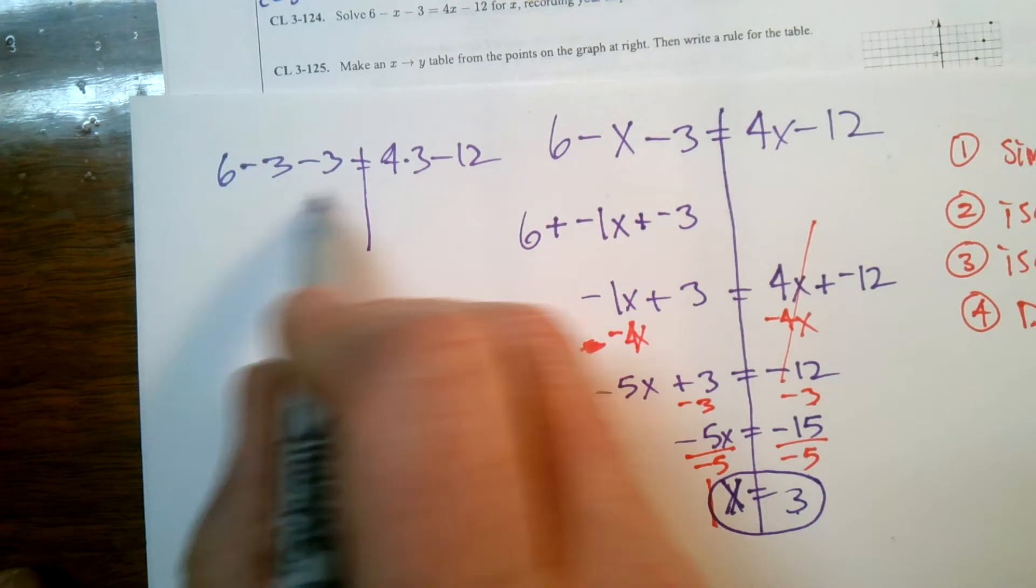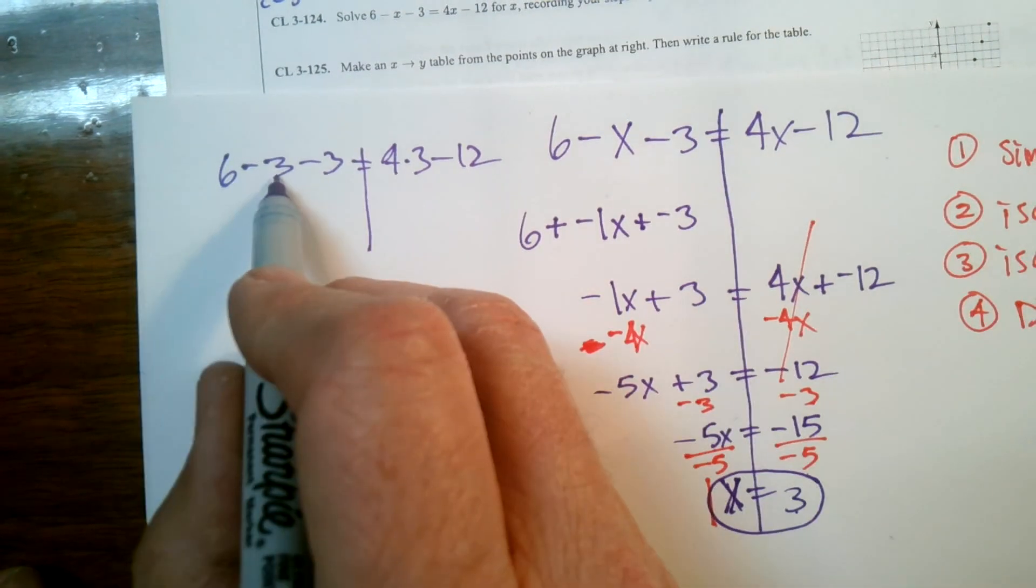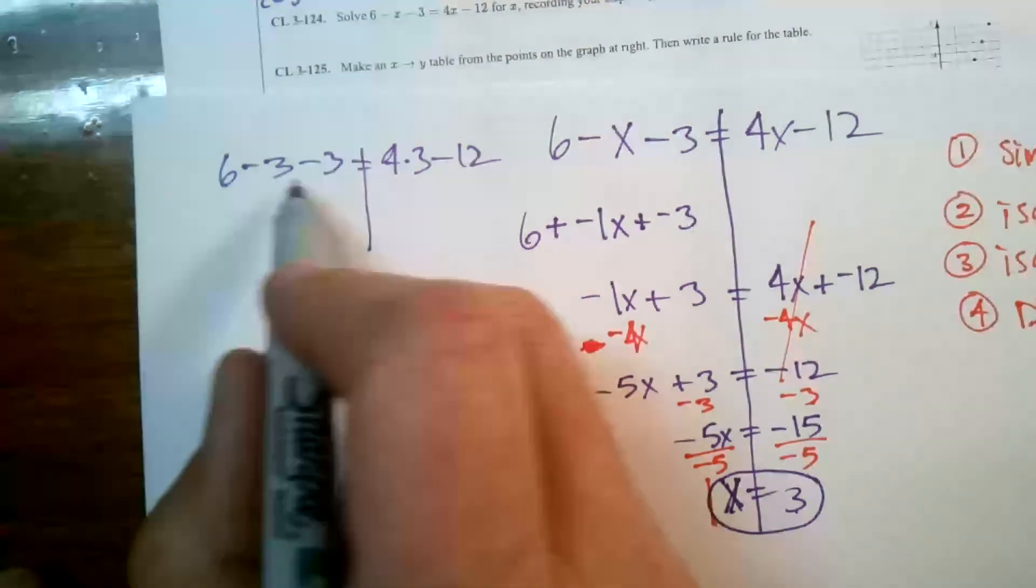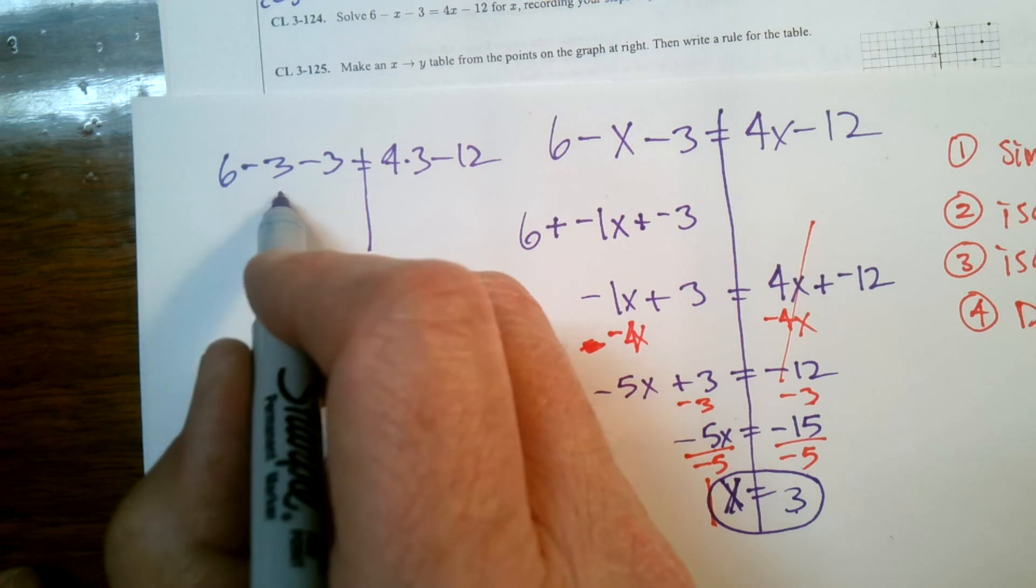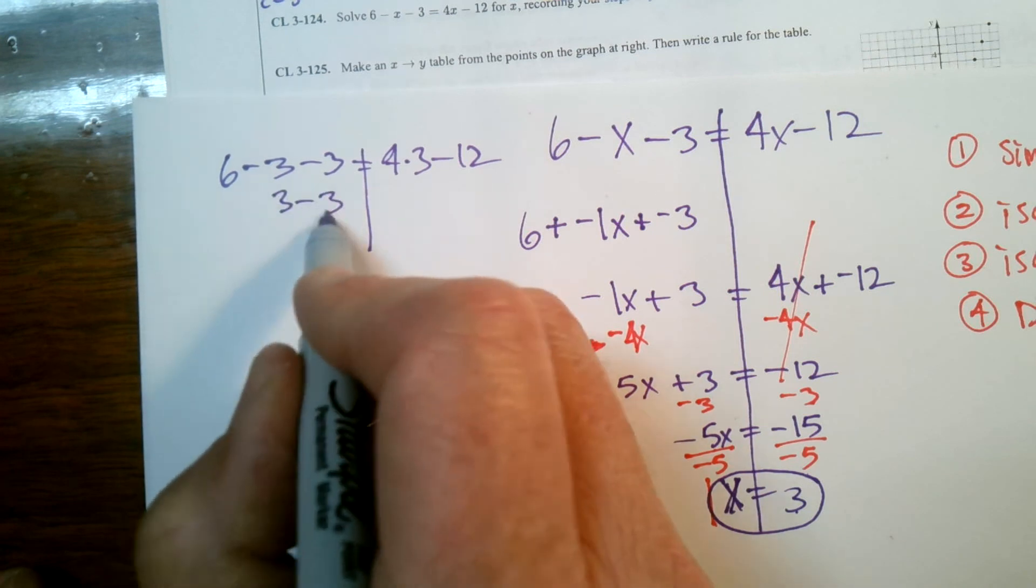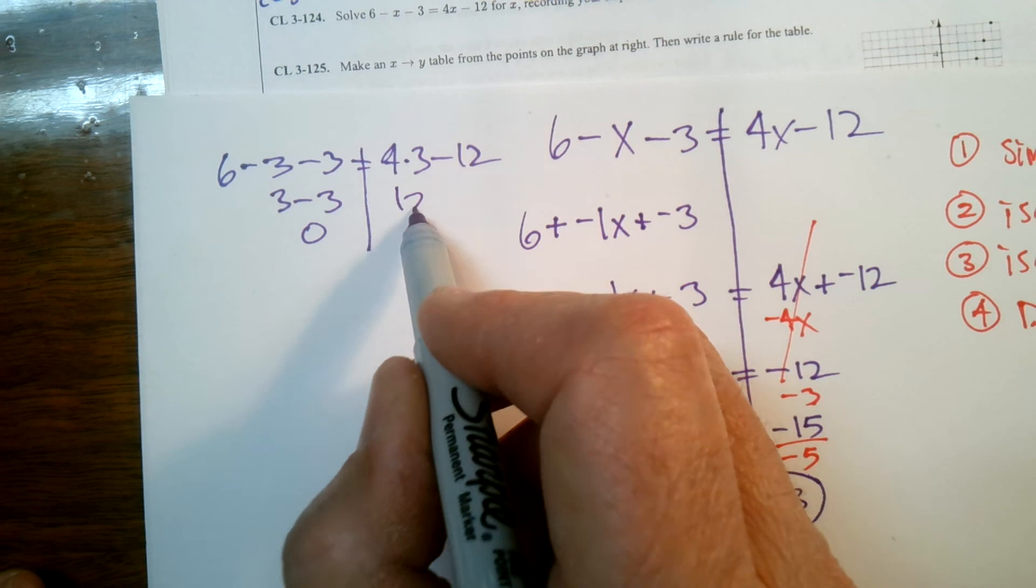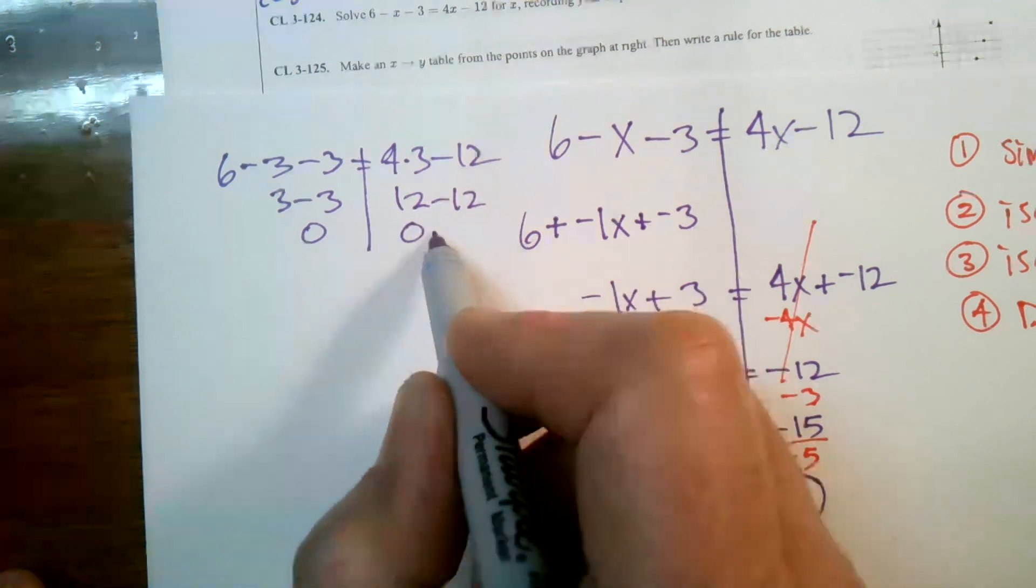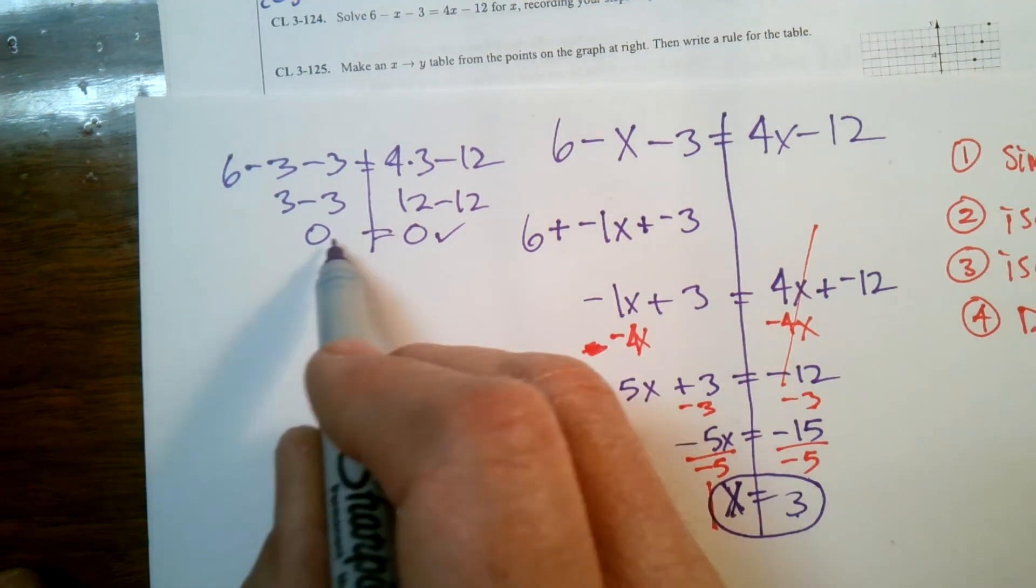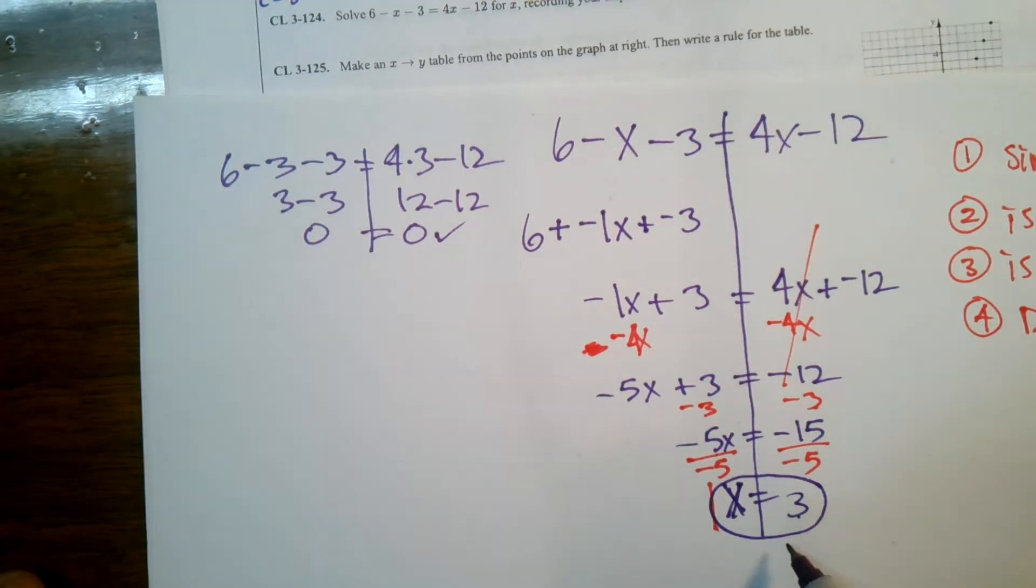6 minus 3 minus 3: 6 minus 3 is 3, 3 minus 3 is 0. 4 times 3 is 12, 12 minus 12 is 0. So it checks out. I do have a true statement. I get zero on both sides. So yes, X does equal 3. There we go.